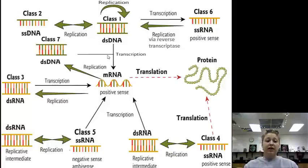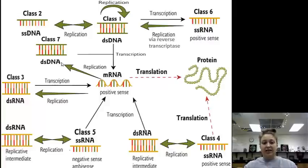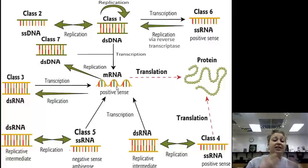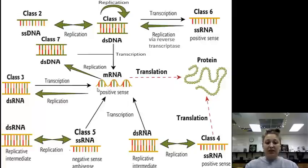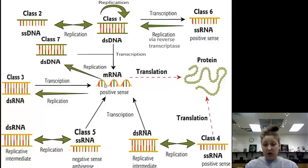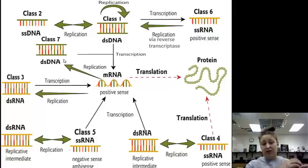Our final one is Class 7, double-stranded DNA. When we have this type of double-stranded DNA, it can go from the DNA through transcription to the mRNA. The difference between Class 1 and Class 7 is that Class 1 replicates from the DNA, while Class 7 replicates from the RNA. This class also uses reverse transcriptase and goes from the RNA back to DNA, giving a single strand of DNA, and then DNA polymerase comes along and completes it.